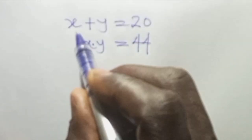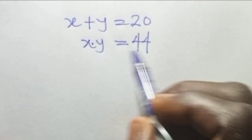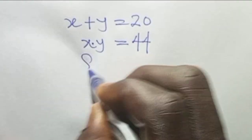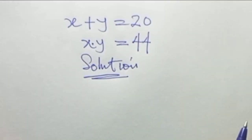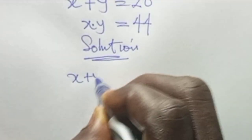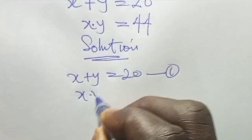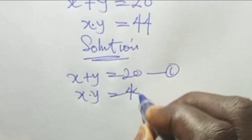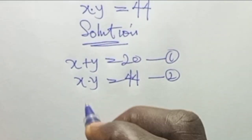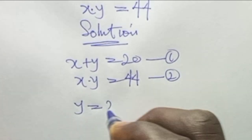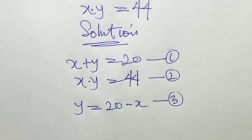We are given s plus y equals 20 and s times y equals 44. Let's solve together. We write s plus y equals 20 as equation 1, and s times y equals 44 as equation 2. From equation 1 we can write that y equals 20 minus s, and we call that equation 3.